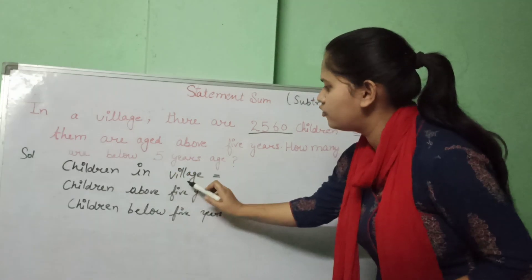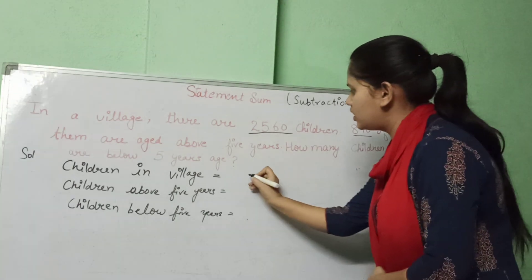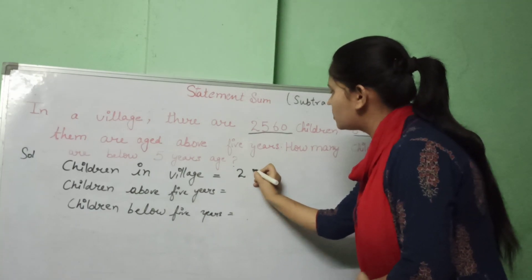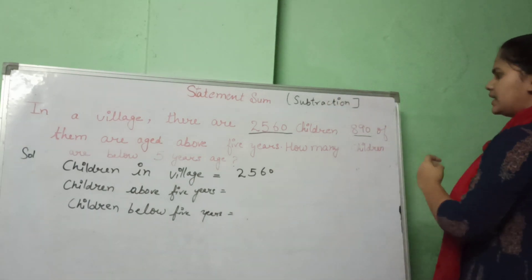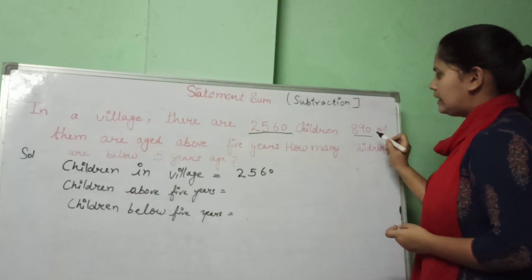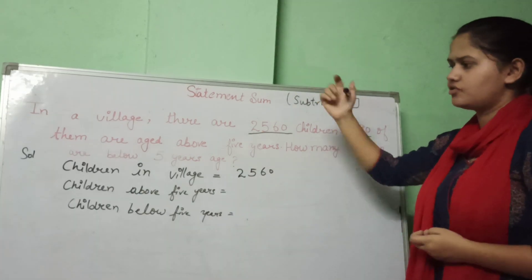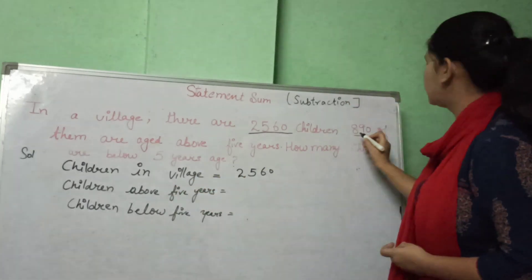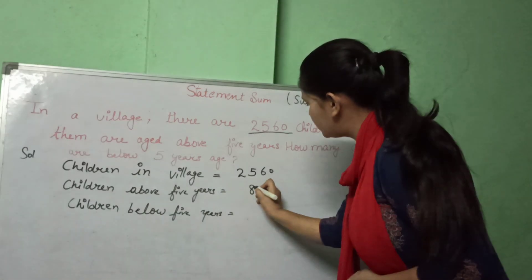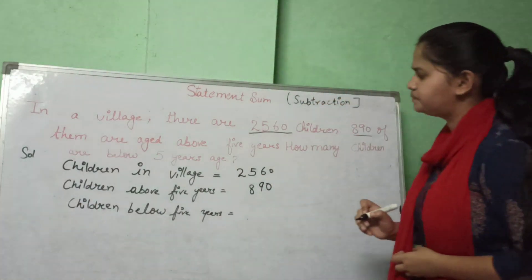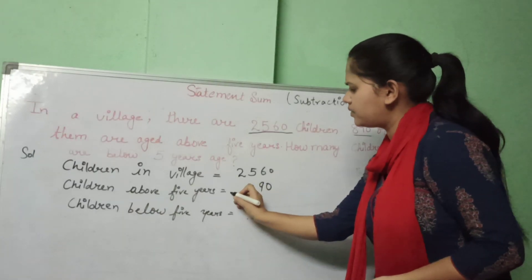Children in the village: 2,560. Those above 5 years: 890. So to find the children below 5 years, we will subtract 890 from 2,560.